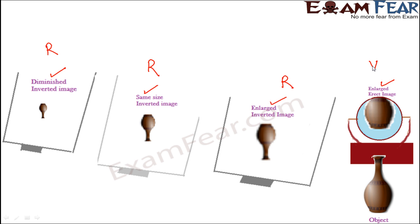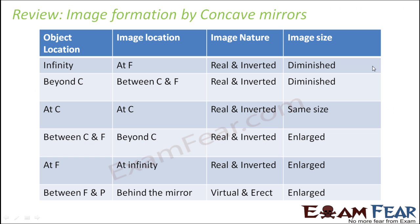Let's have a quick review of image formation by concave mirrors. We have made a list of object locations, where the image will be formed, what type of image will be formed, and what size it will be. When the object is at infinity — very far from the mirror — the image is formed at the principal focus. The image is real, inverted, and smaller in size. When the object is beyond the center of curvature, the image is formed between C and F, and it is inverted, small in size, and real.